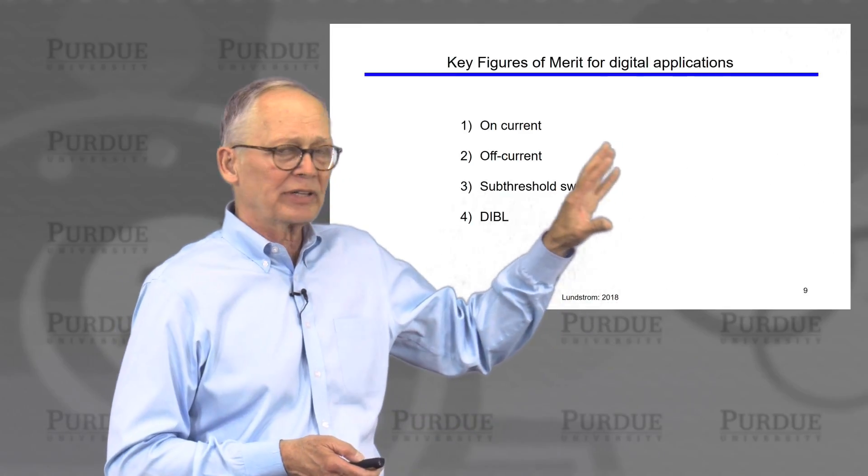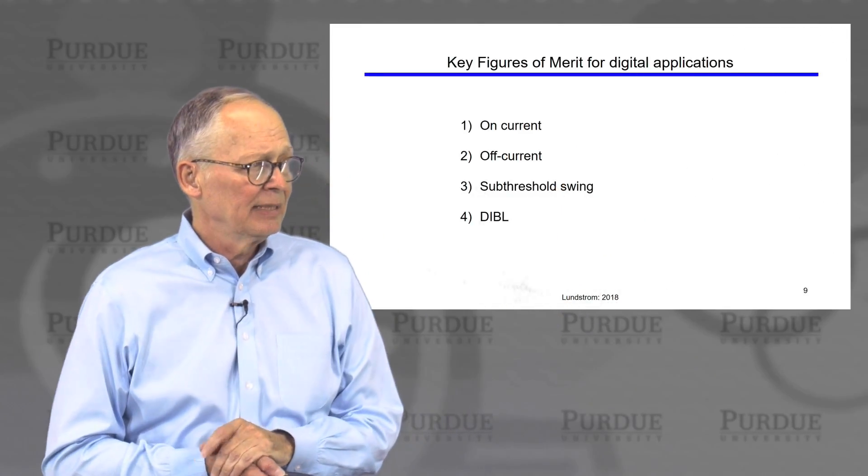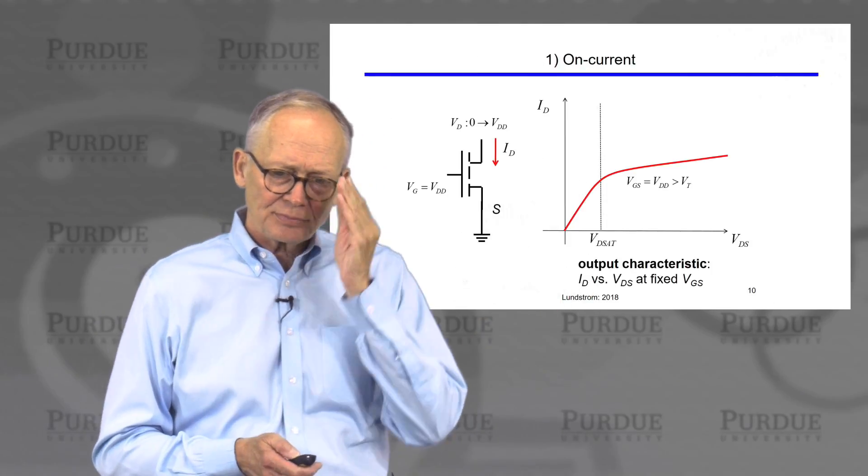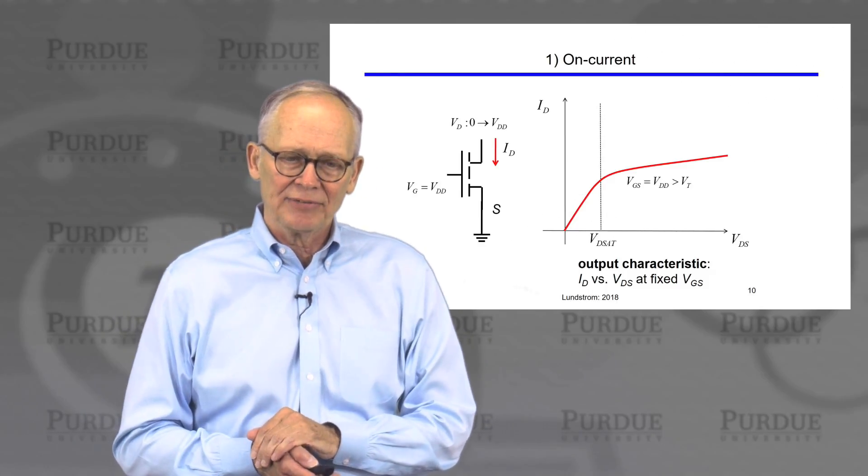So, we summarized four key figures of merit, four circuits of this type, and the four were on-current, off-current, sub-threshold swing, and DIBL. We explained how we would extract these from a measured IV characteristic.